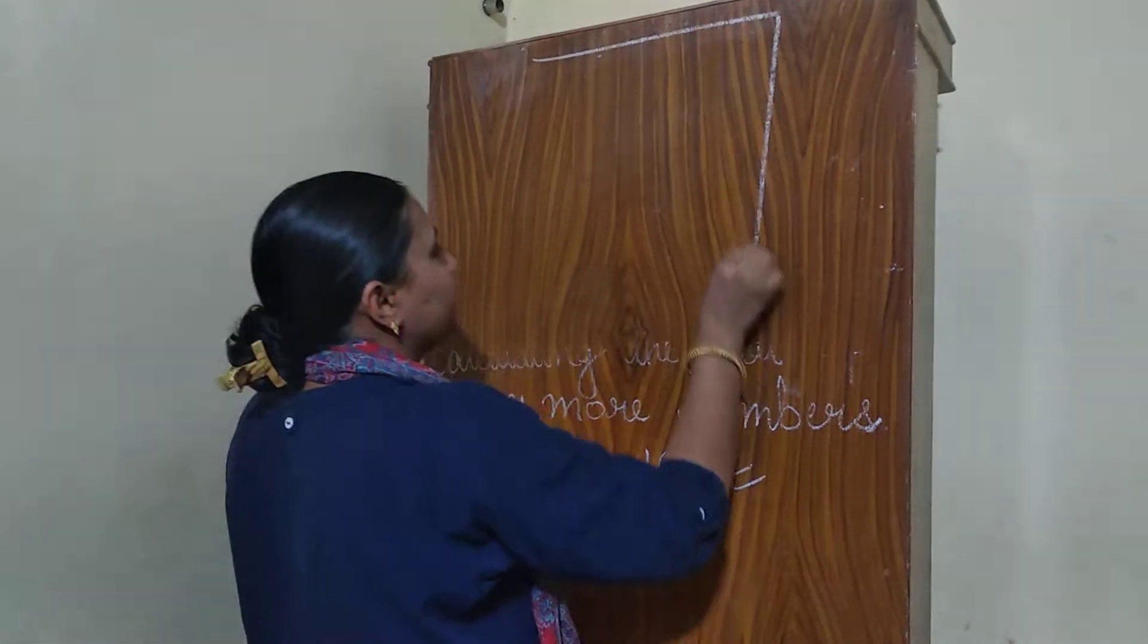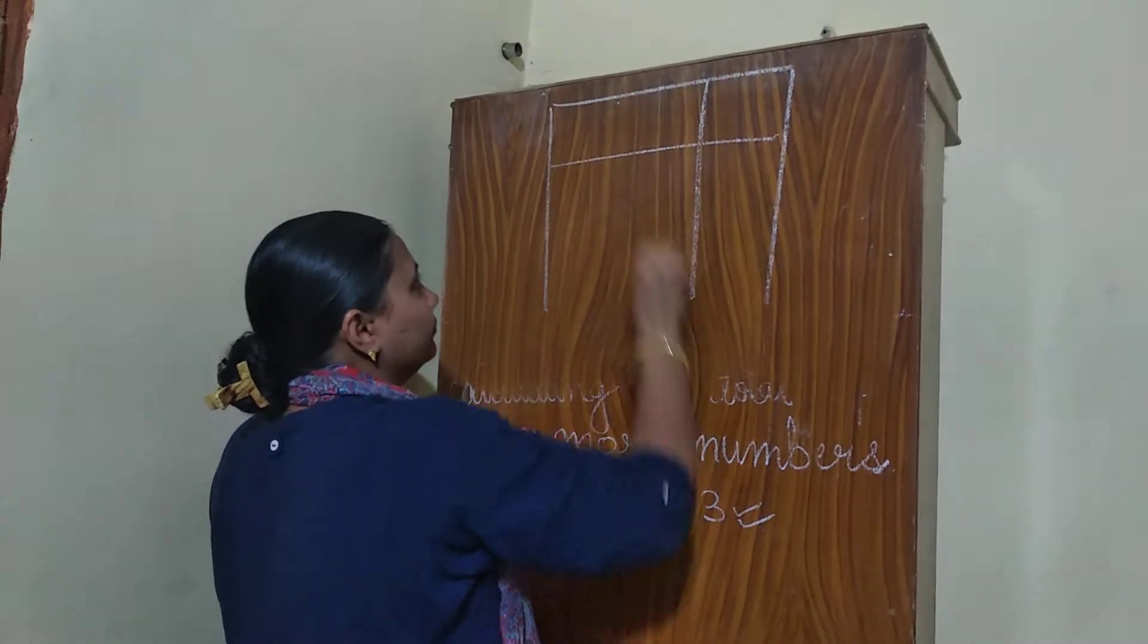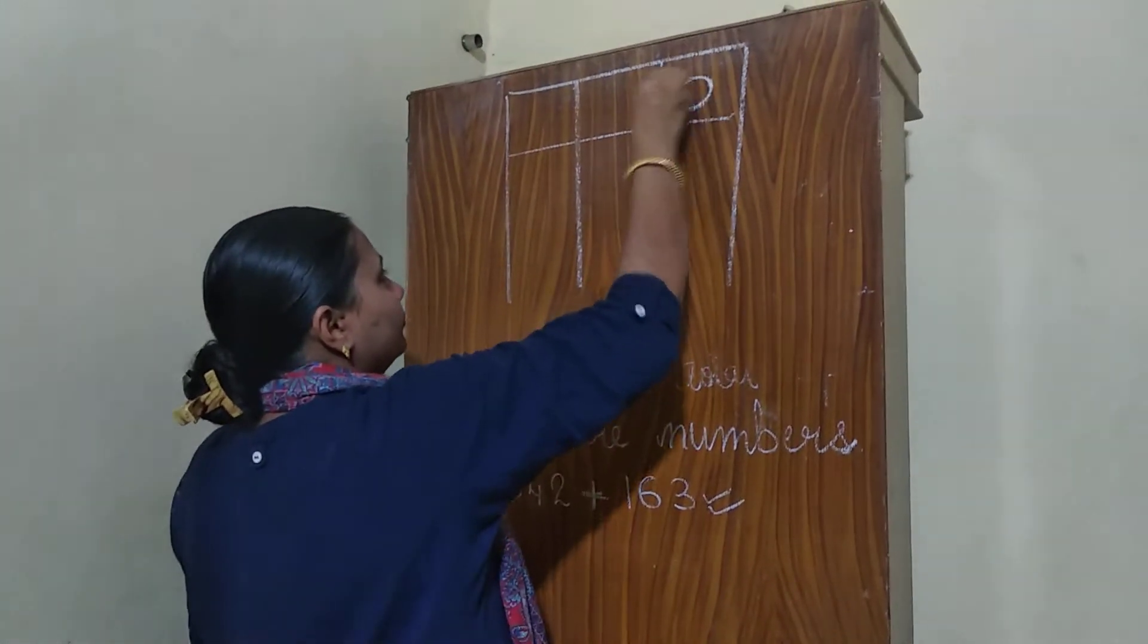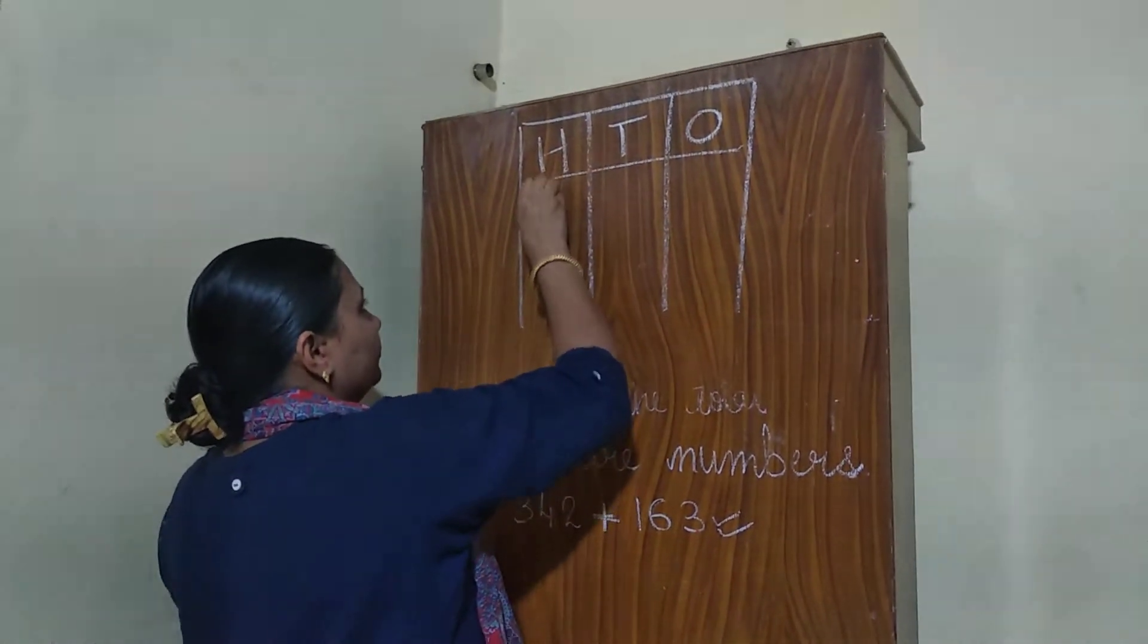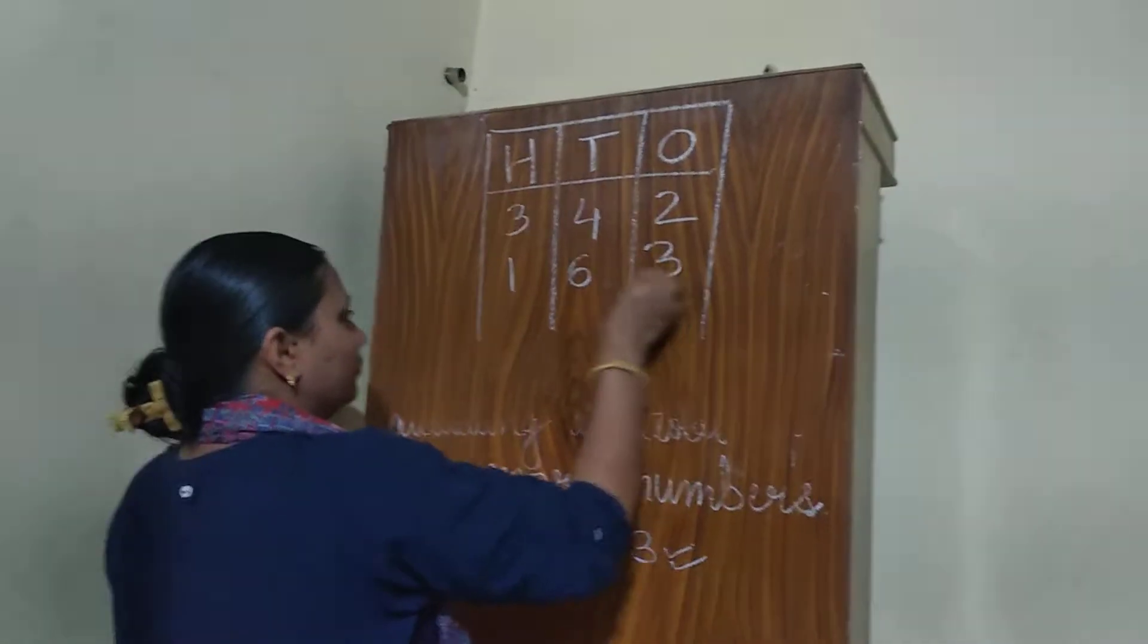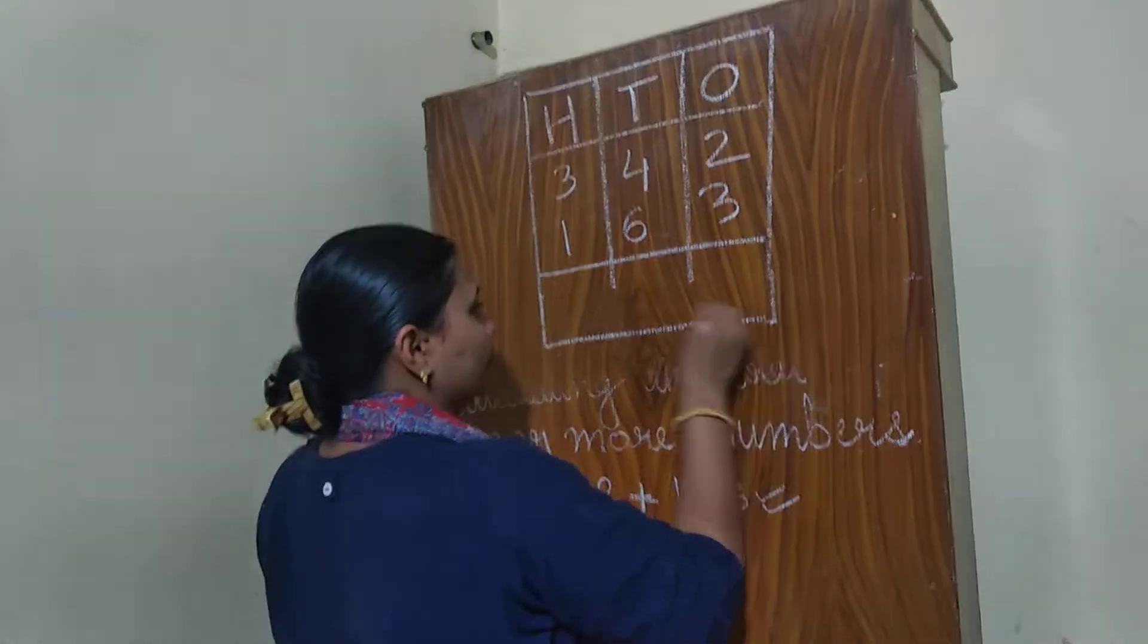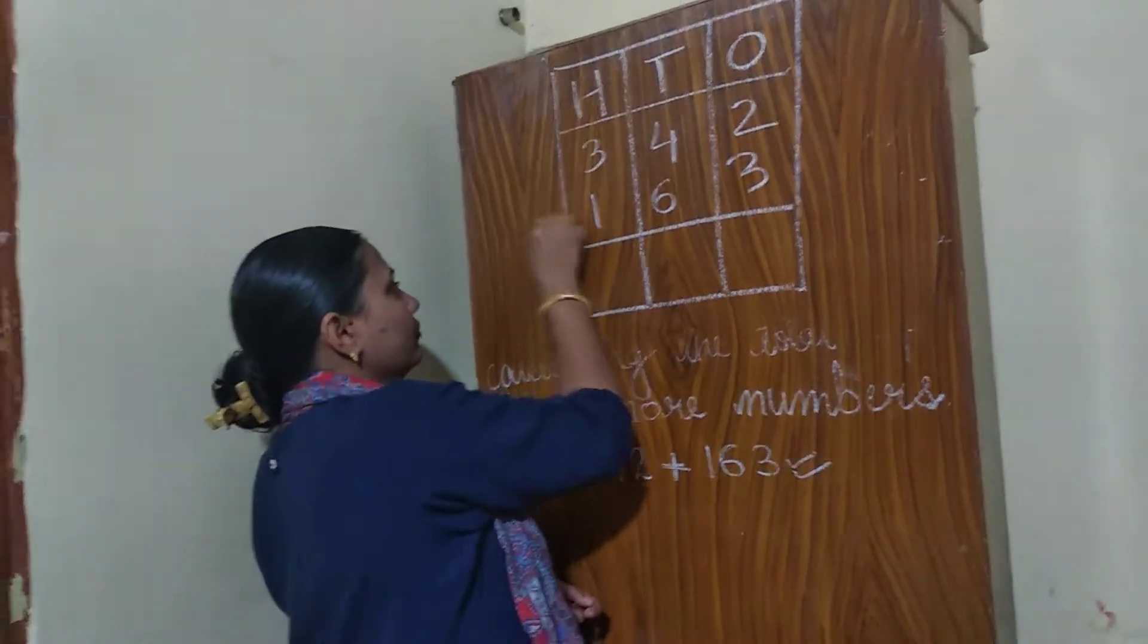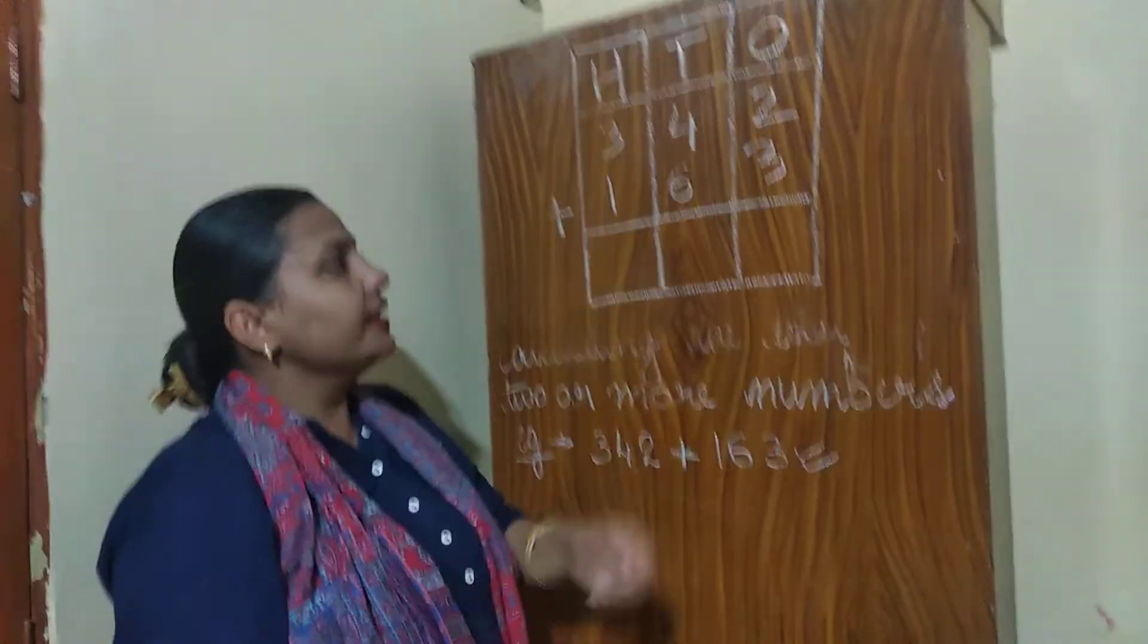First we will arrange this one in column. Now see, 342 plus 163.